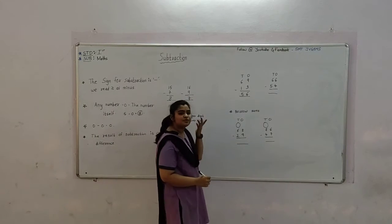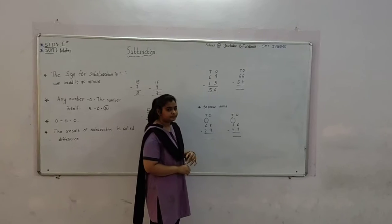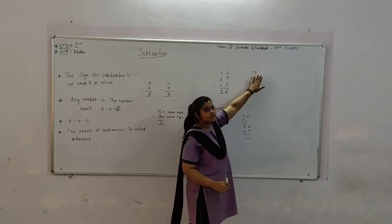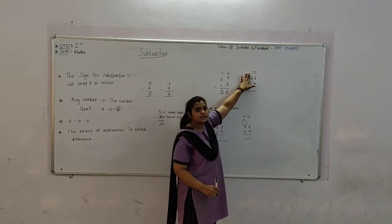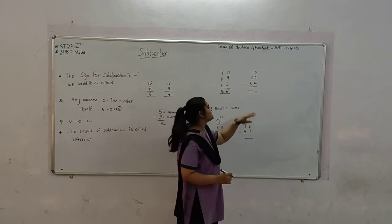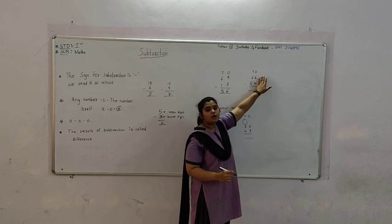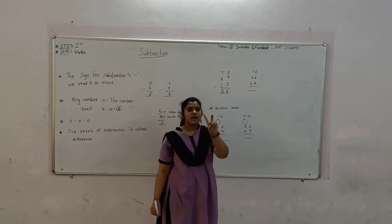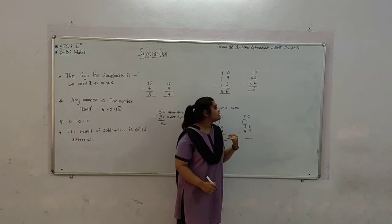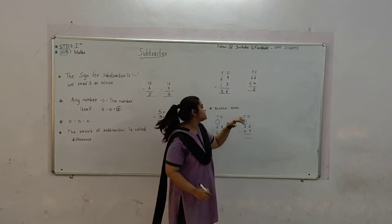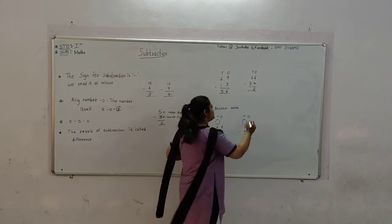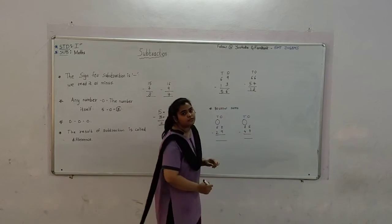Now let's do some more digits. In this, which place is this? It is the 1s place. And this place is the 10s place. We always have to start from the 1s place. Keep 4 in your mind and count up to 6 — 5 and 6. The 1s place is done. Now for the next place, keep 5 in your mind and count up to 6 — after 5 is 6. So 12 is the difference.